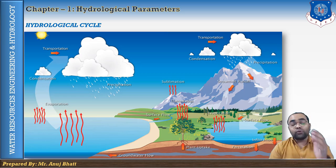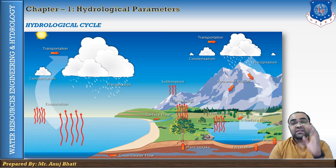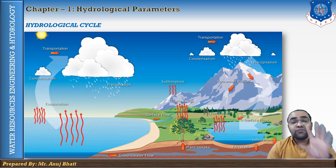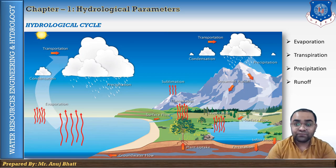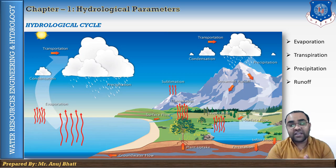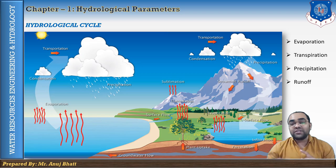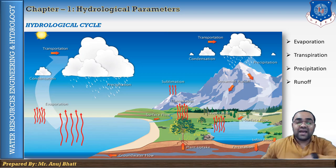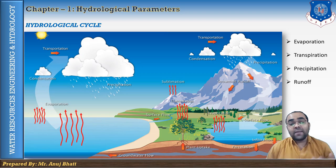The hydrological cycle consists of four different processes: evaporation, transpiration, precipitation, and runoff. The cycle has no beginning and no end, so the order can vary. Let us first discuss evaporation.